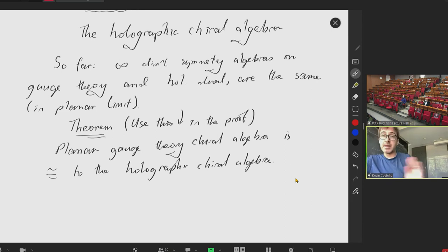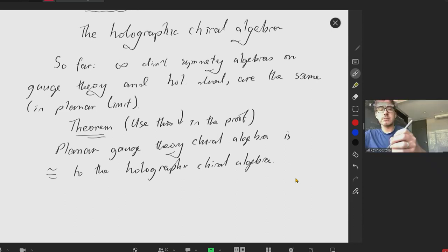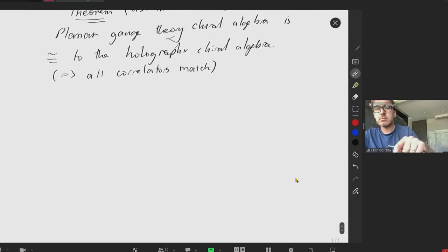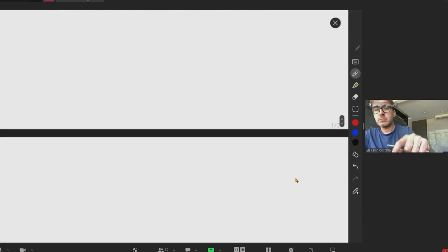So we'll be able to show that we can match all of the OPE coefficients and in particular all correlators. The first thing we need to do to understand this is that we can match all of the OPEs to understand how to build the holographic chiral algebra. So we started discussing this a little bit yesterday.